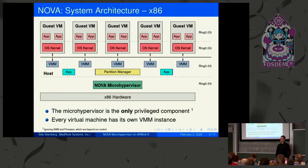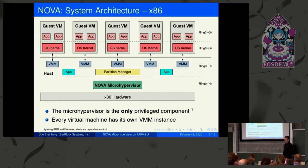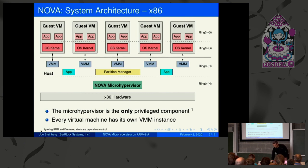Those of you who've been following the microvisor dev room today have seen Nova on x86 already in action when Norman gave his talk on Gnode. Nova on x86 is a system that has existed for more than 10 years. Without virtualization extensions, you have two processor rings — ring 0 for the kernel and ring 3 for user mode.